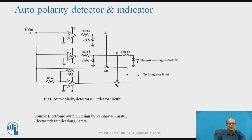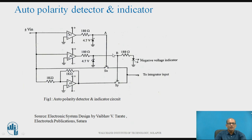A similar circuit is used at the output of comparator A2. Op-amp A3 is connected as an inverting amplifier with gain = -RF/R1. Since R1 and RF are both 1K, the gain of this inverting amplifier is -1. The output of comparator A1 at point A is connected to control switch SX, and the output of comparator A2 at point B is connected to control switch SY. Now let us understand how this circuit operates.